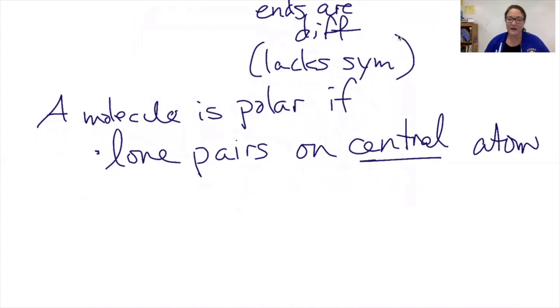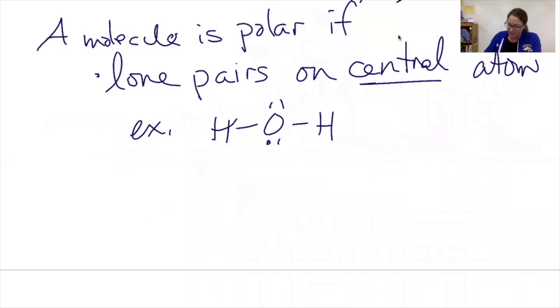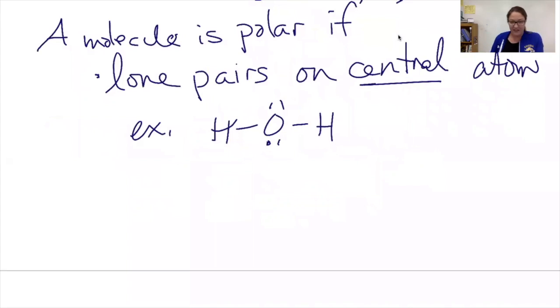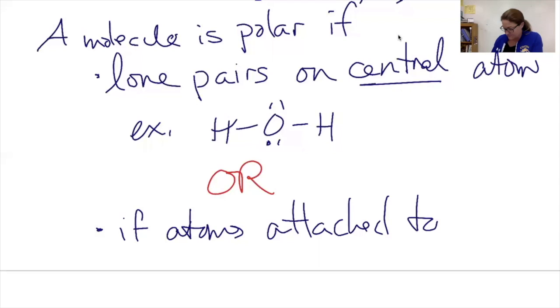And this definition won't hold up if we do expanded octets, which we don't get to in this class, but in later classes we do. So for example, water has lone pairs on the central atom, so it's going to be a polar molecule. Or if the second thing is true.